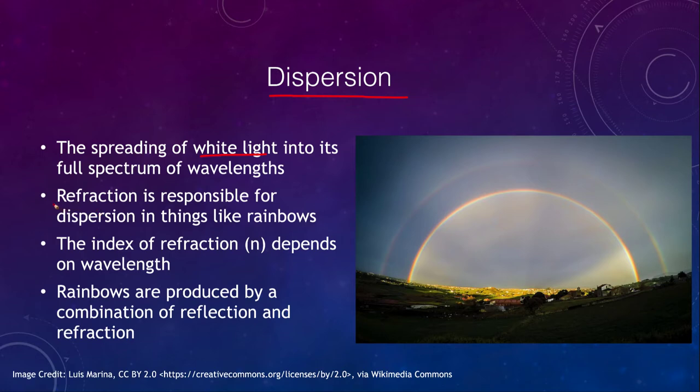Dispersion in something like a rainbow is caused by refraction, because the index of refraction — remember, that was n, the ratio of the speed of light to the velocity of light within a substance — depends on the wavelength. So in reality it will be different for red light than for blue light.